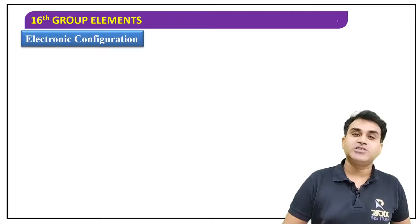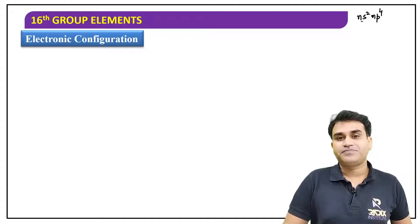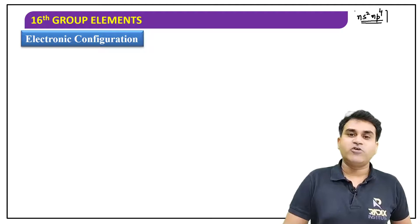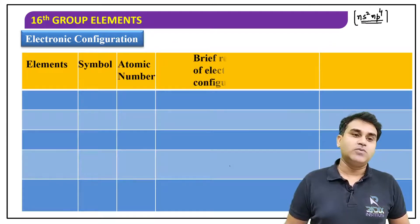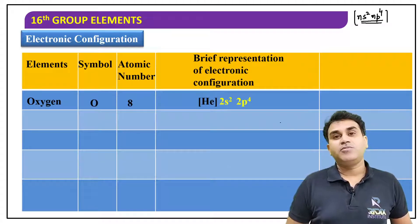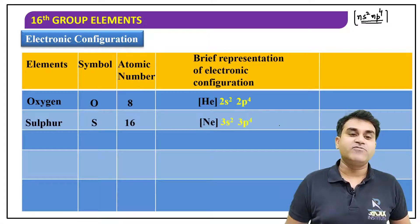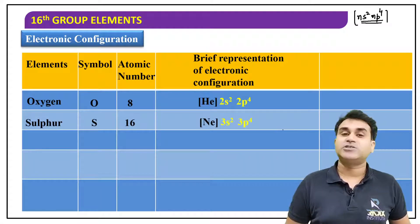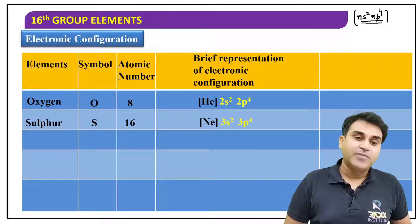Electronic configuration — the general electronic configuration of the 16th group is ns²np⁴. They are short of 2 electrons in their octet. Oxygen: [He] 2s² 2p⁴. After that, sulfur: [Ne] 3s² 3p⁴. So in the outer shell, we have s²p⁴. Now notice that here 3p is present and also 3d⁰.